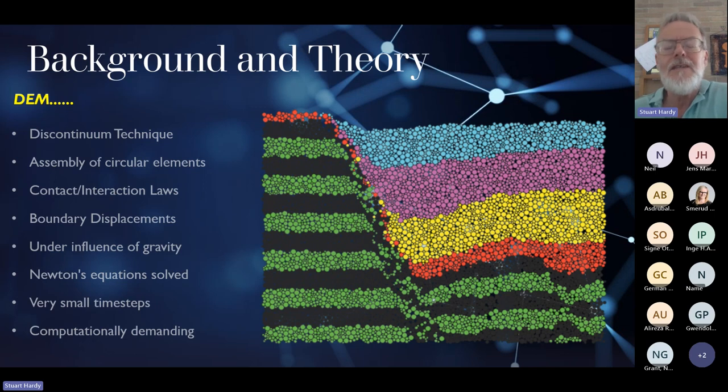These elements respond to external imposed boundary displacements under the influence of gravity. Newton's equations of motion are solved to result in a velocity, which means very small movements of individual elements. This results in very small time steps. We have to do a lot of solution for both stability and accuracy. So it's computationally demanding, although this is becoming less of a concern because desktop machines are now incredibly powerful.